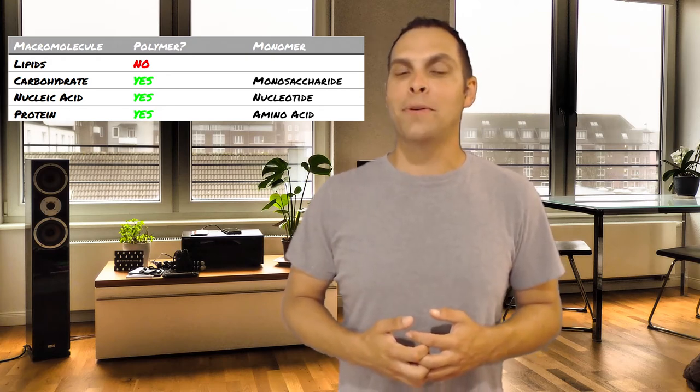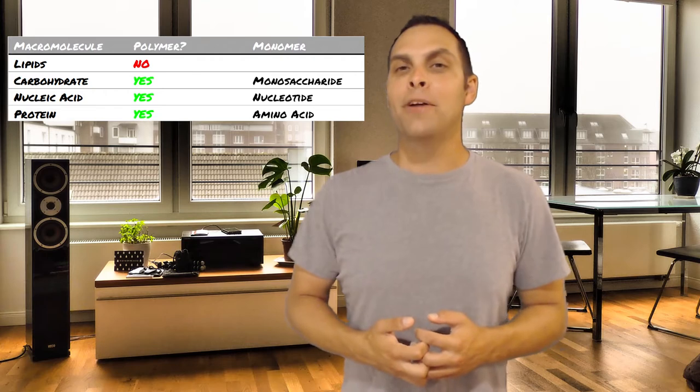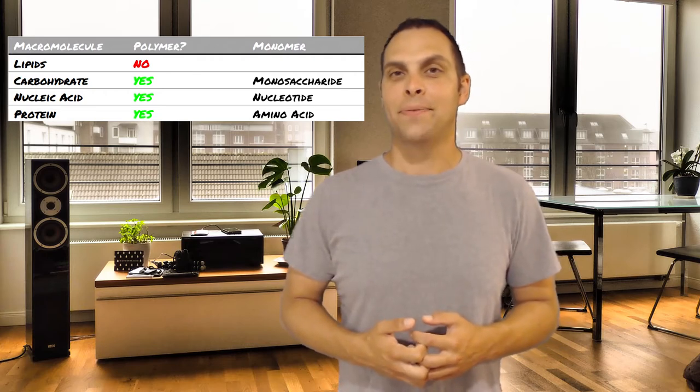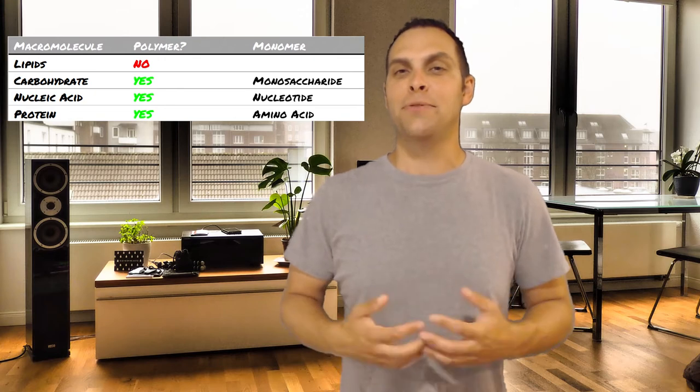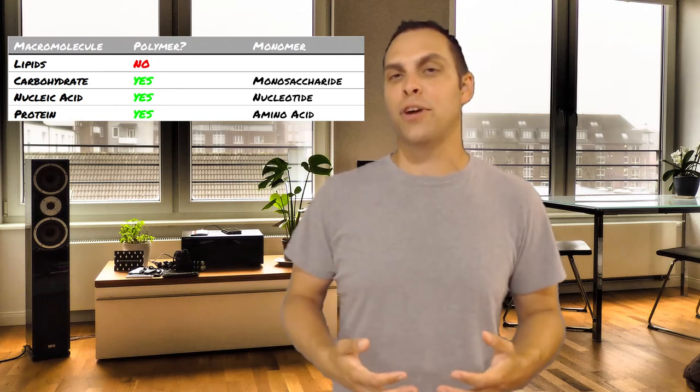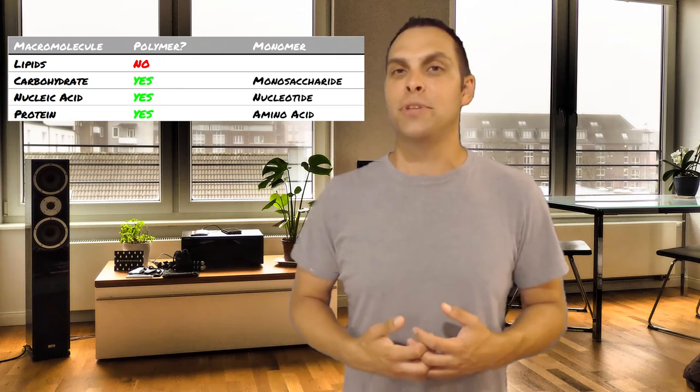Proteins are polymers that consist of monomers called amino acids, which are joined together in different combinations to give each protein its unique composition and its unique structure, which in turn gives it its unique behavior.